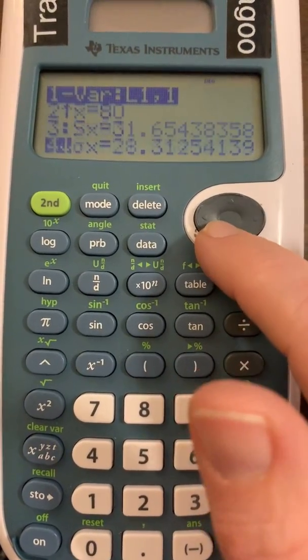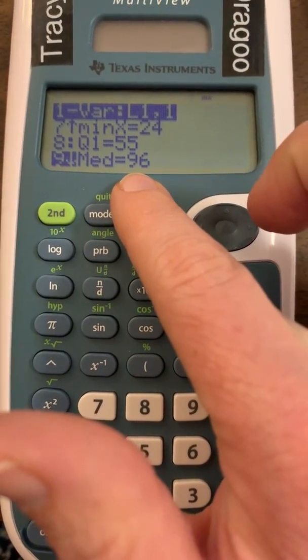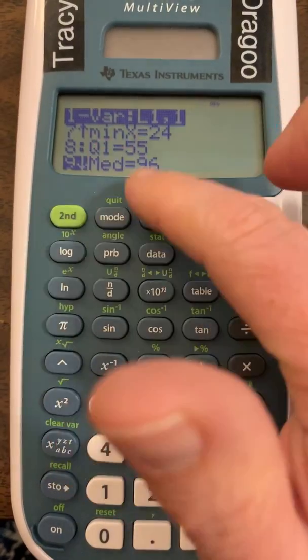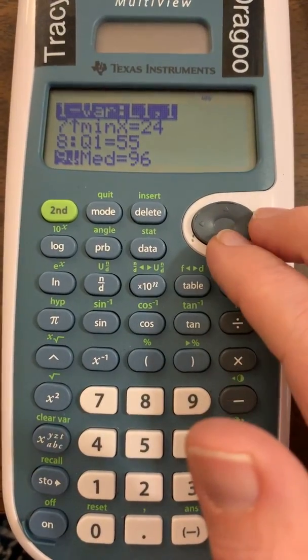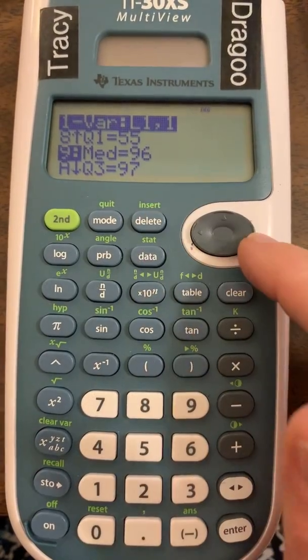And if you come down to the ninth item, it gives you the median of 96. These other items tell you other things about the data that you may or may not need, but for our purposes we're doing the mean and the median.